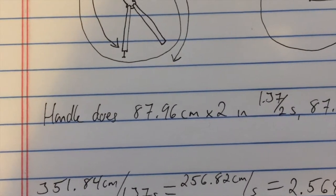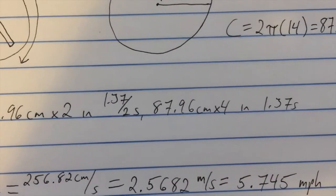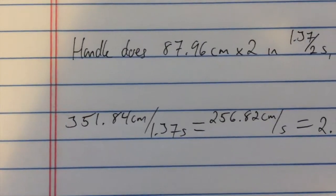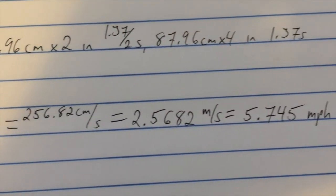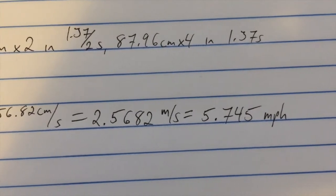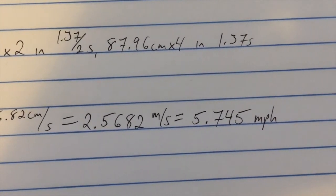So the handle does that distance twice in half the time because it's got to come back around again, which means it does that circumference four times in the 1.37 seconds. Math all of that out, and you get an average speed of that handle moving at 2.5682 meters per second, or about 5.745 miles per hour.